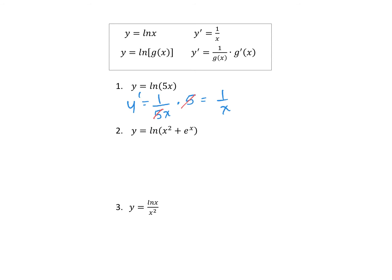For question 2, y prime equals 1 over g(x) — where g(x) is what's inside the bracket — times the derivative of g(x), which is 2x plus e to the x. There's not much to simplify, so we just leave it as that.